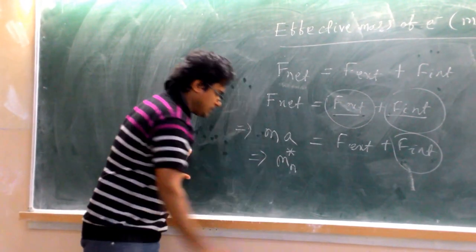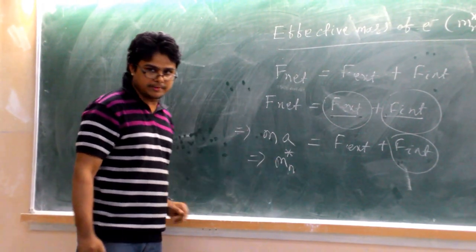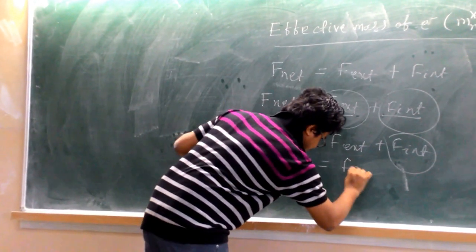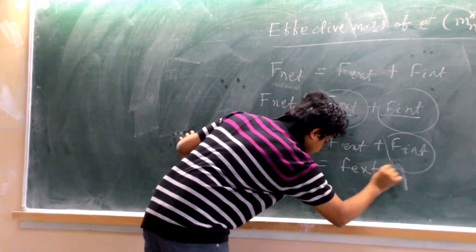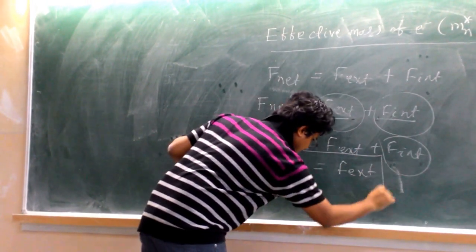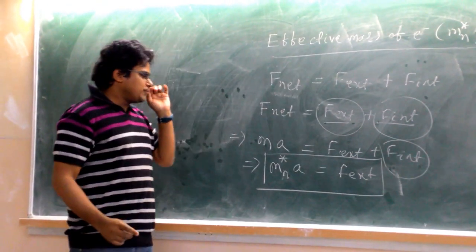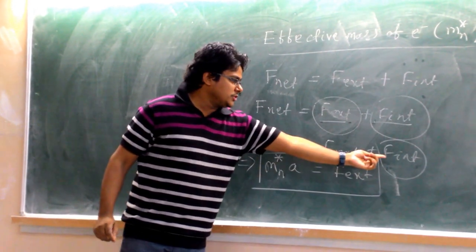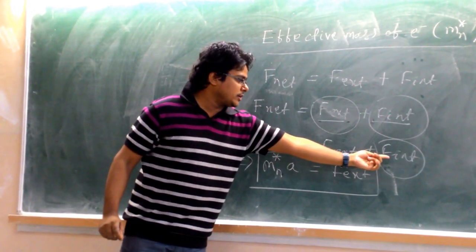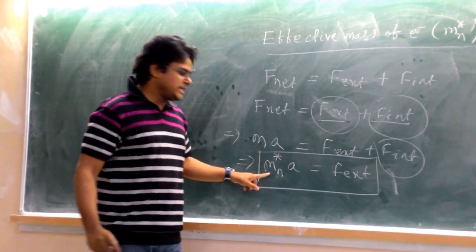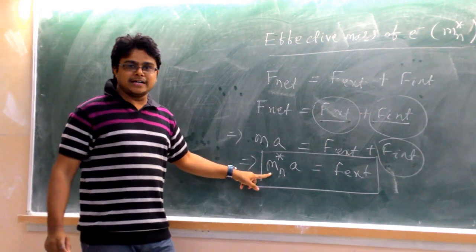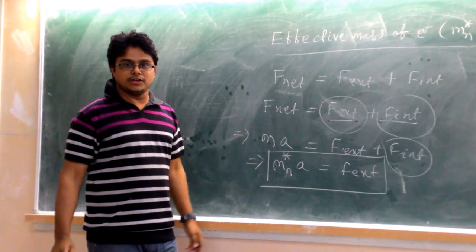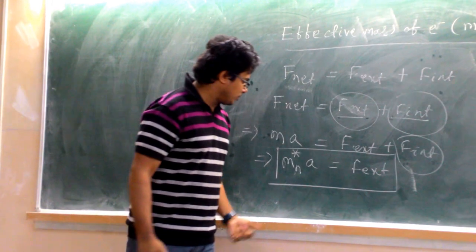For the electron, we write this changed mass with the notation M* (M-star), to distinguish it from the rest mass. This is the classical approach: to find the external force by taking into consideration the effect of the internal force on the changed mass. That changed mass is called the effective mass of the electron.